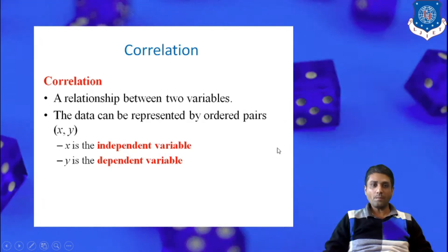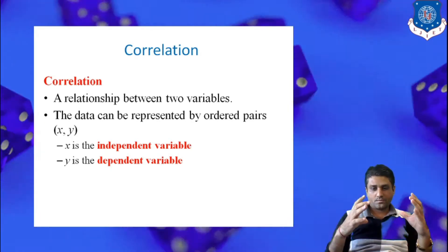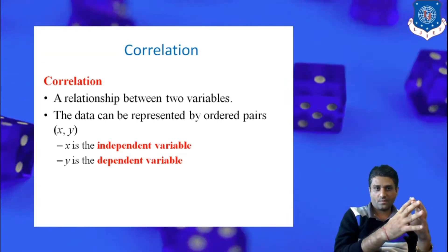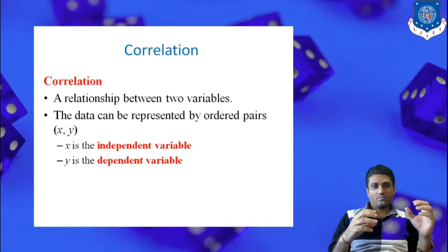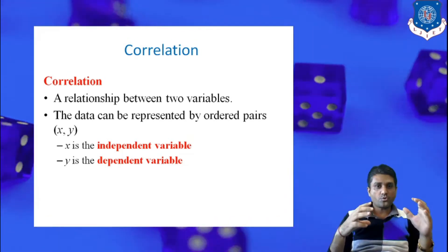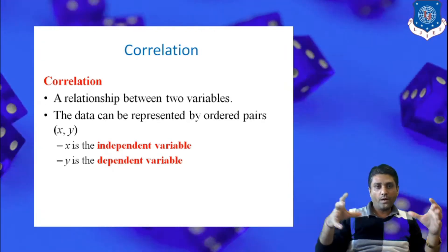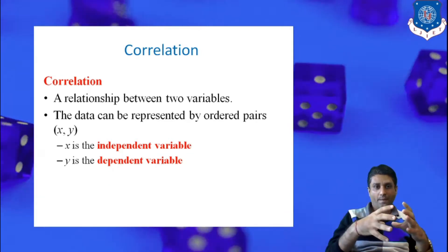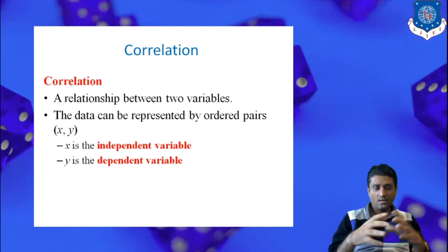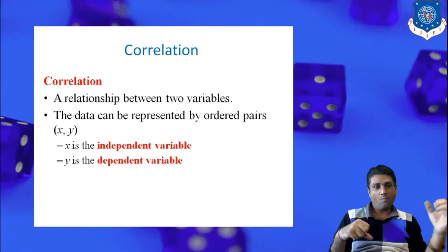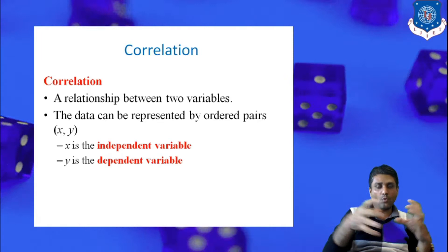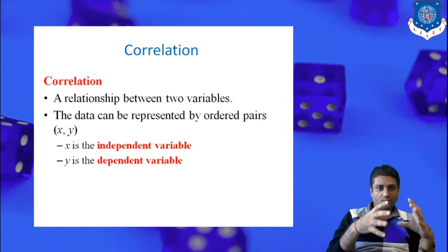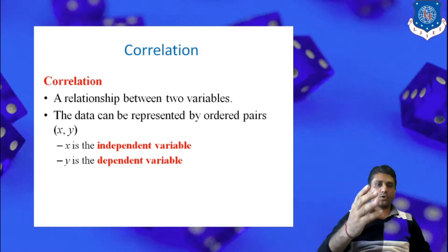The word itself suggests that if we have to study the relation between two particular random experiments or two random variables, which type of relation exists among variable x as well as variable y — to study the relation between these two random variables is known as correlations.